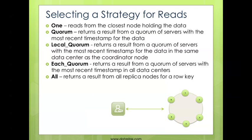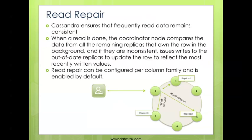Now let's turn to reads in Cassandra. You have the 'one' option, meaning when you read a piece of data, the closest node holding that data responds back. Quorum, local quorum, each quorum, and all work exactly the same way for reads as they do for writes — you either need a majority of nodes or all nodes to respond for the read to be successful.